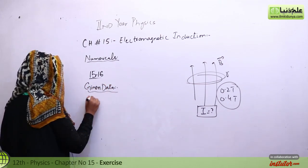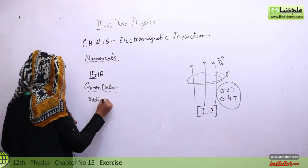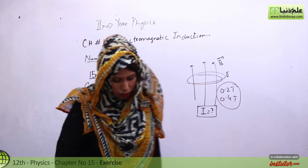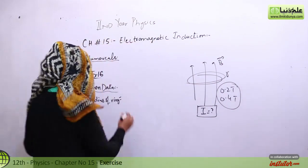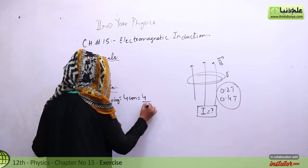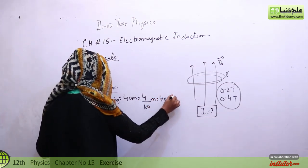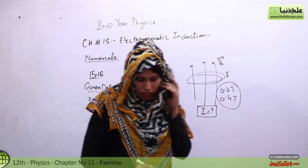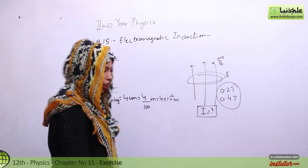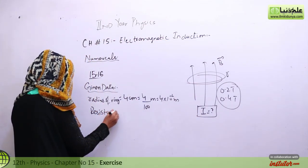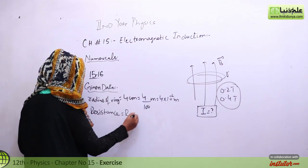Students, start with the given data. First, we have the radius of the ring, approximately 4 cm. If we convert it to meters, we can write it as 4 times 10 to the power minus 2 meters.